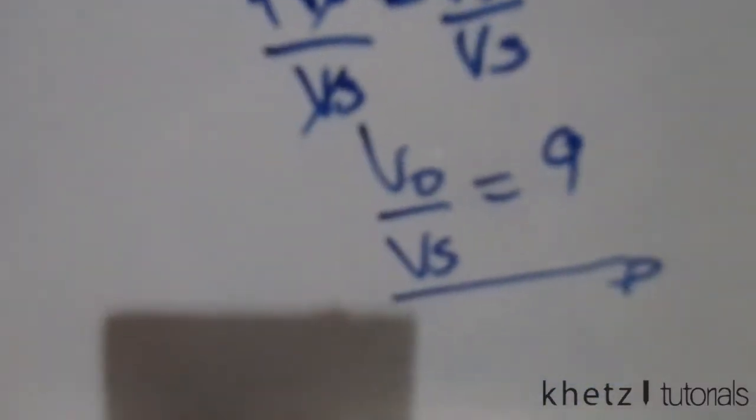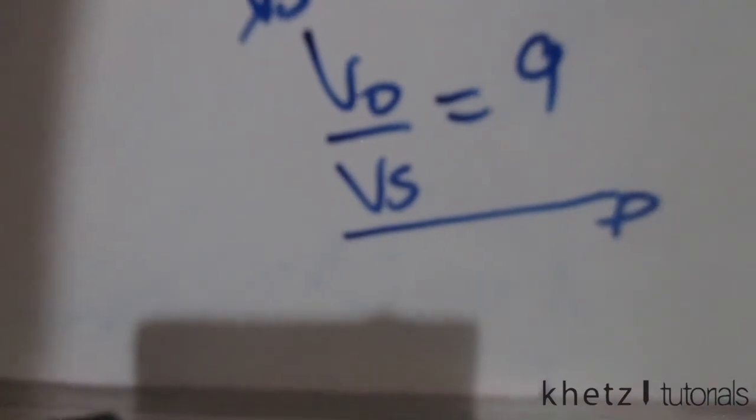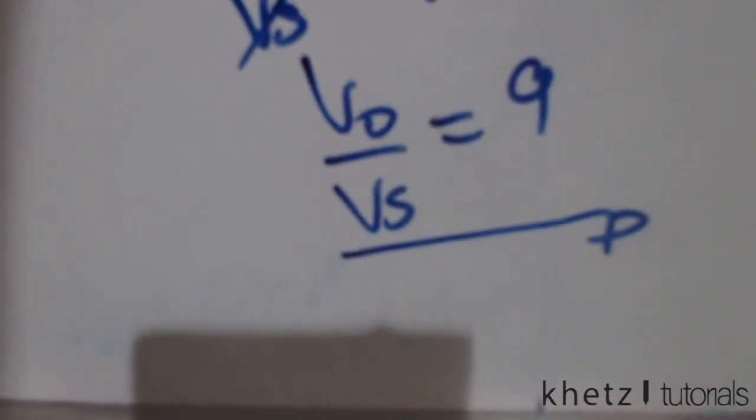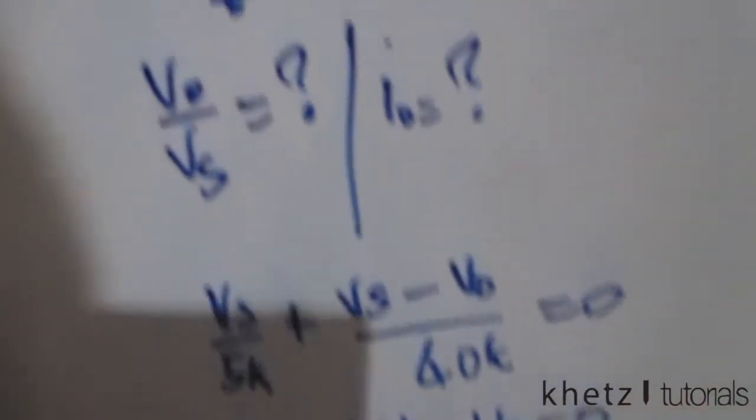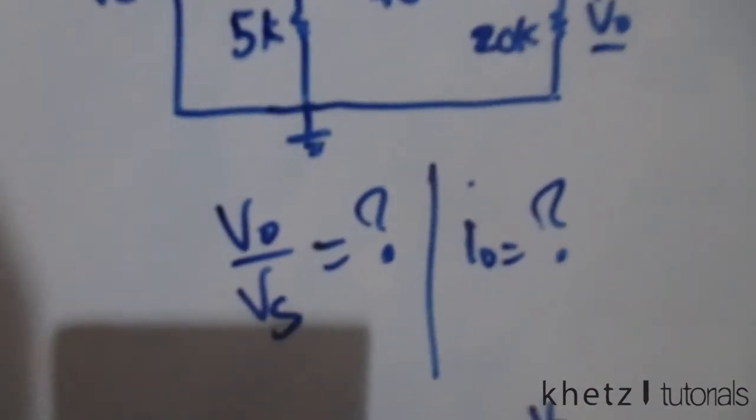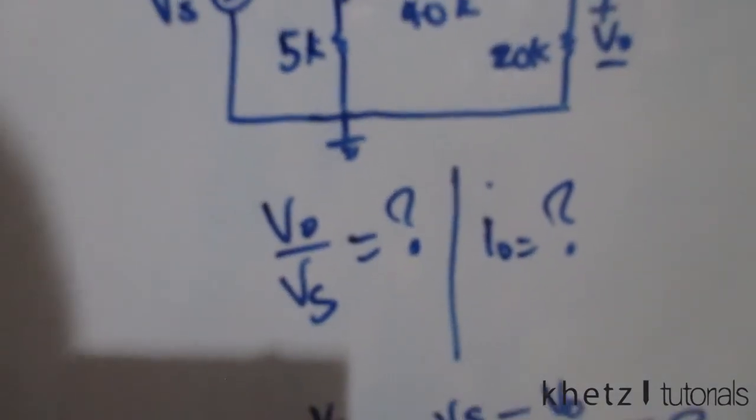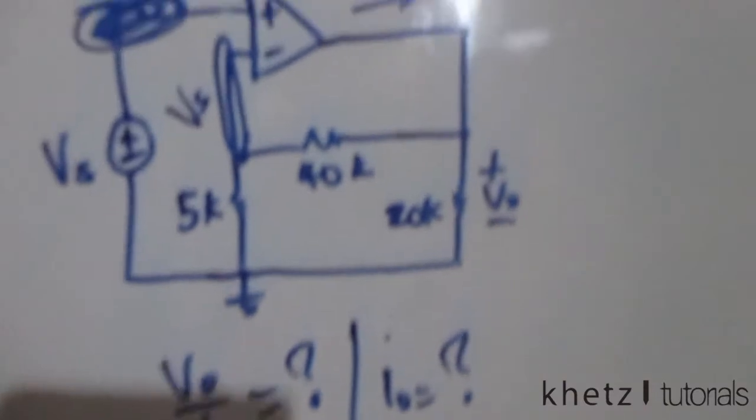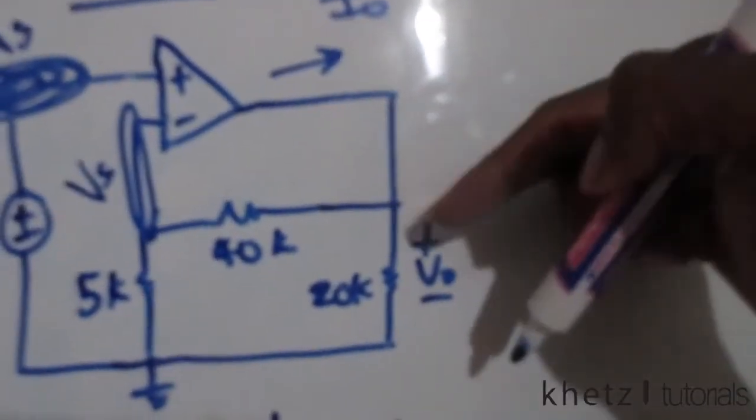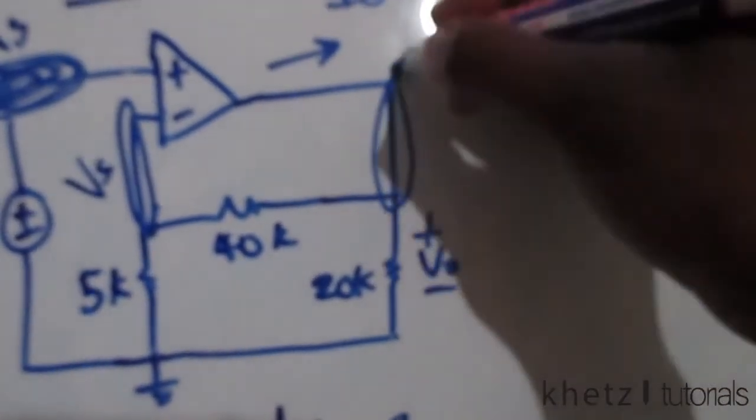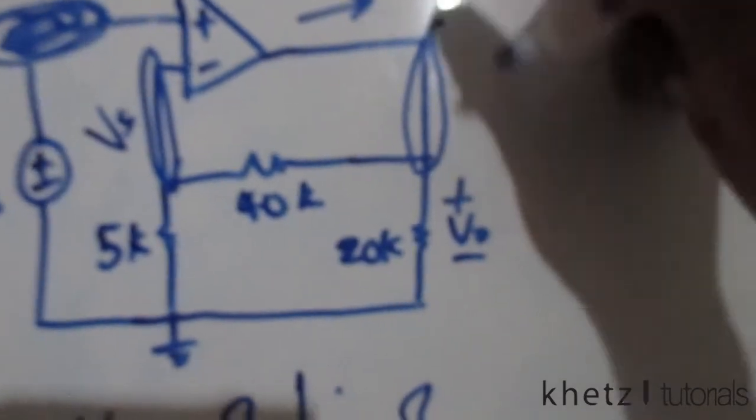Moving on to now find our io. To find io, we see that io is associated with this particular node, so the node voltage at that node is vo.